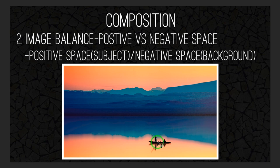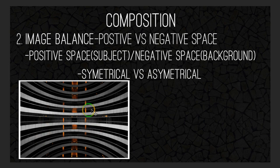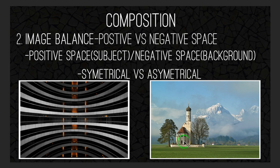The next aspect of image balance is symmetrical versus asymmetrical. A symmetrical photo is going to be balanced — what you see on the right side is exactly what you see on the left side. Here we have asymmetrical: we have this building on the left third of the image, putting the weight over on that side. We have two thirds here and one third here — this is an asymmetrically balanced image.